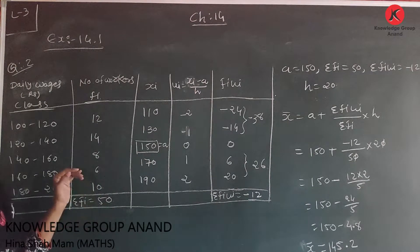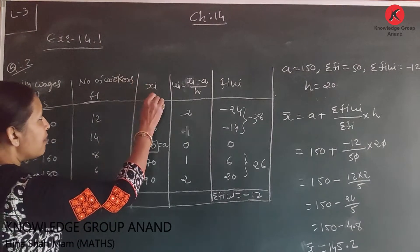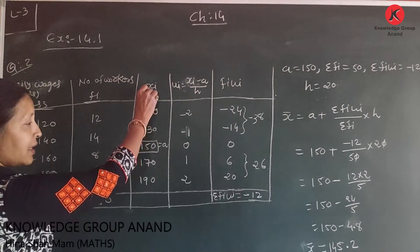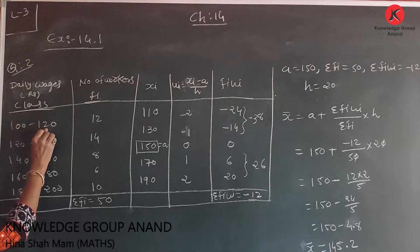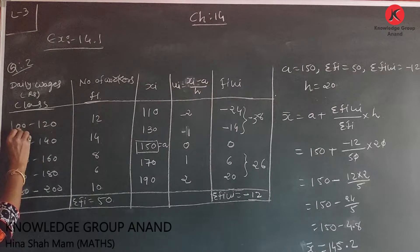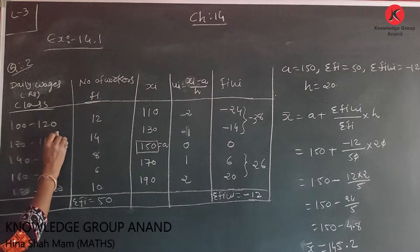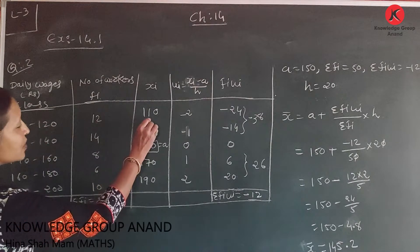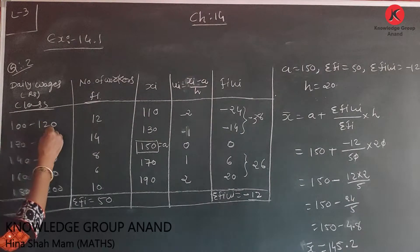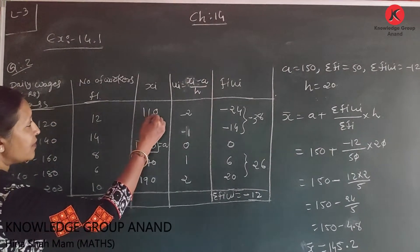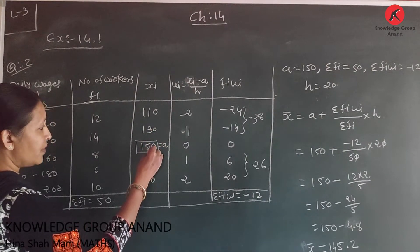First we find Σfi, then xi (class mark). Starting: (100+120)/2 = 220/2 = 110. The class size is 20, so we add 20: 110, 130, 150, 170, 190.